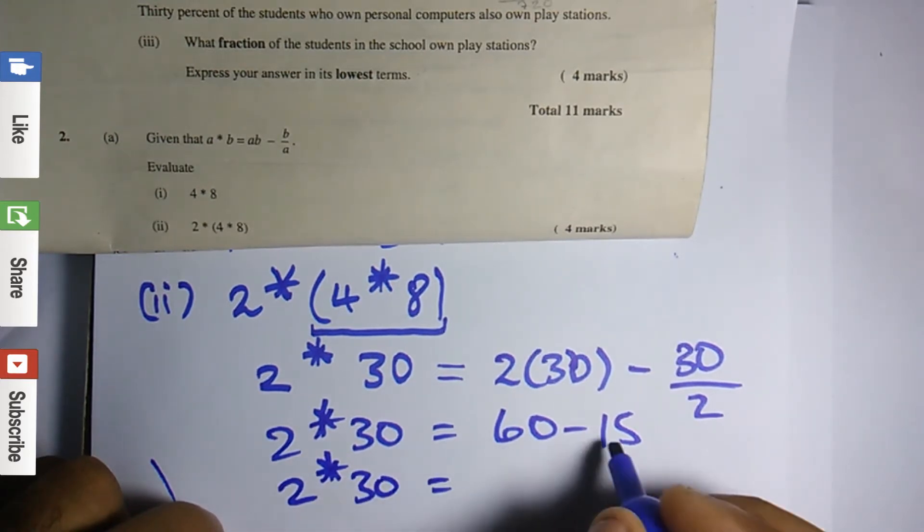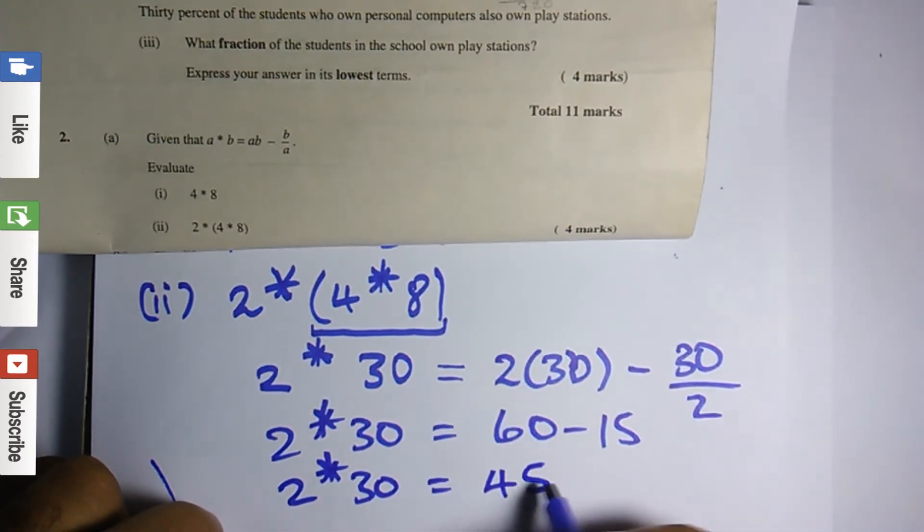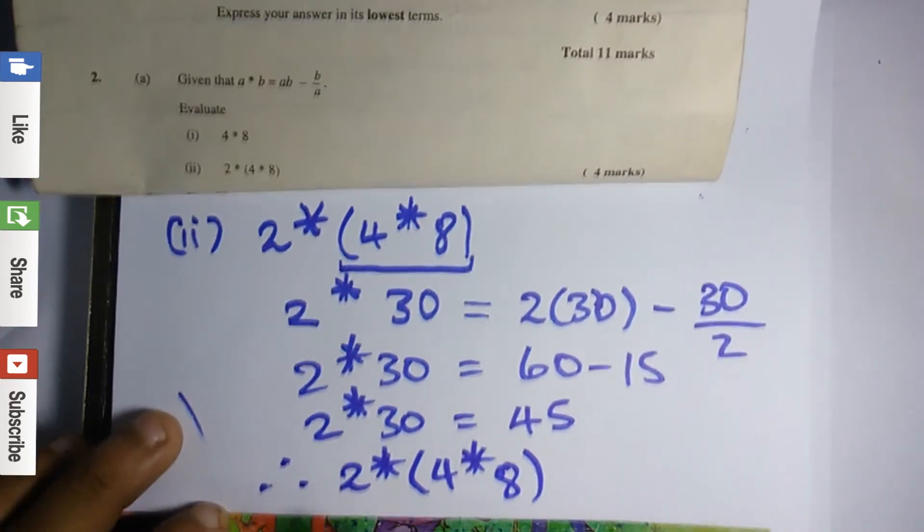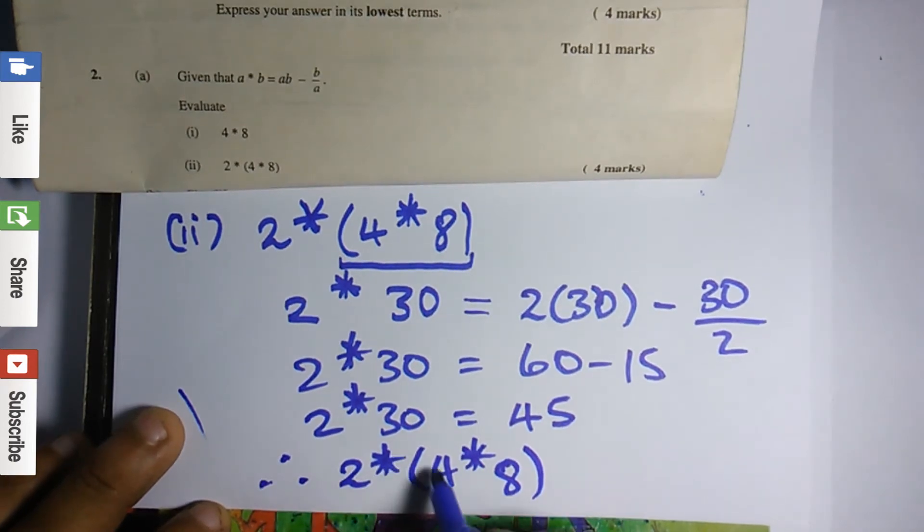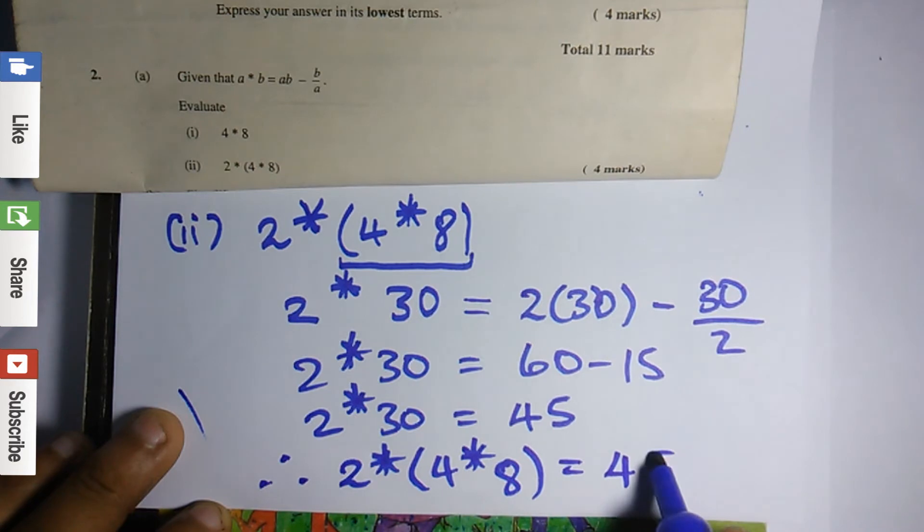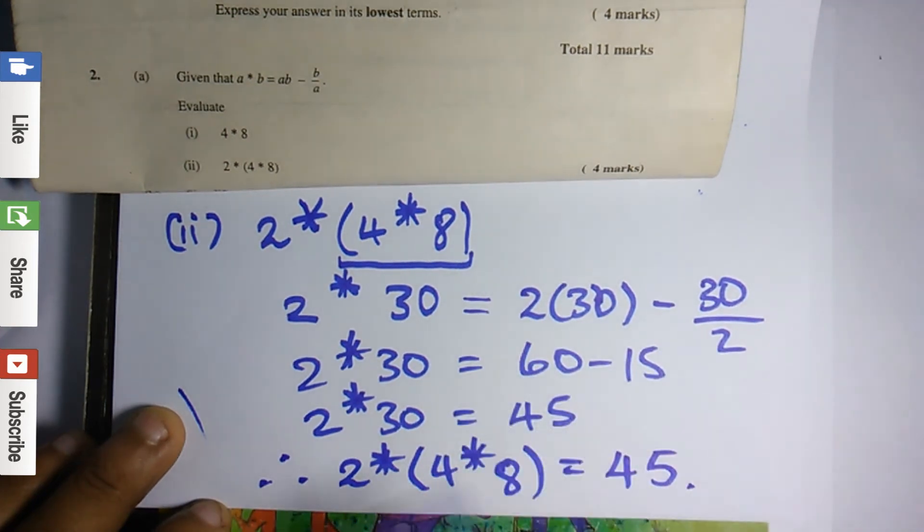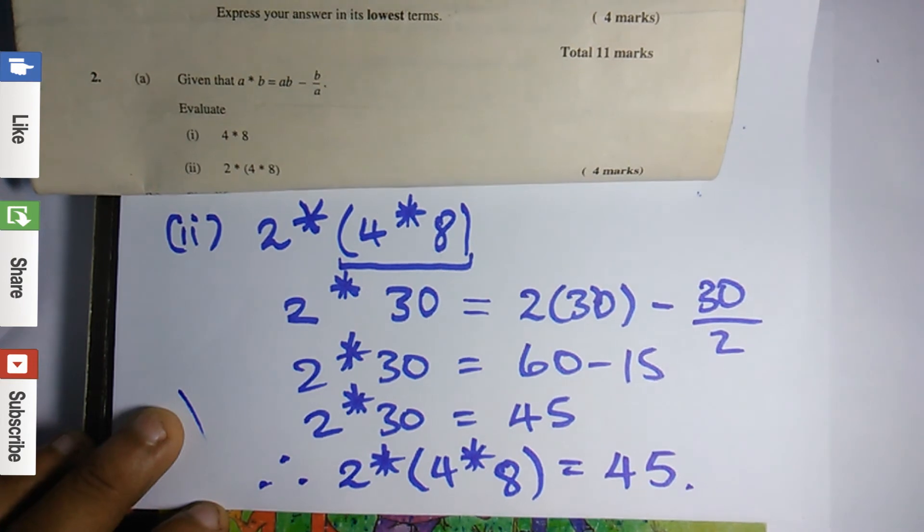So the original question was 2 star bracket 4 star 8. You can write therefore 2 star bracket 4 star 8 close bracket is equal to 45. With binary operations it's just substitution. So that's all you need to do - just substitute the values into their respective positions and you'll get the answer.